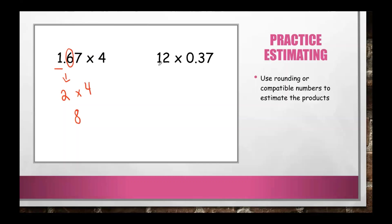Now looking at 12 × 0.37: for 0.37, the digit in the highest non-zero place value is 3, and we use the 7 to determine rounding. Since 7 indicates rounding up, 0.37 becomes 0.4. For 12, the greatest place value is the 1 in the tens place; looking at the 2 to its right, the number stays the same and the 2 drops to 0, giving us 10. So we multiply 10 × 0.4, which equals 4.